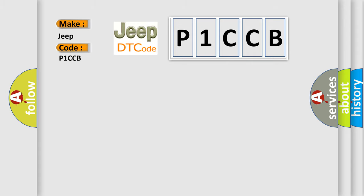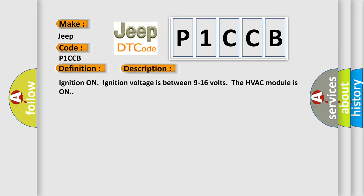The basic definition is Air Flow Controls Seven Circuit Above Maximum Threshold. And now this is a short description of this DTC code. Ignition on, ignition voltage is between 9 to 16 volts, the HVAC module is on.